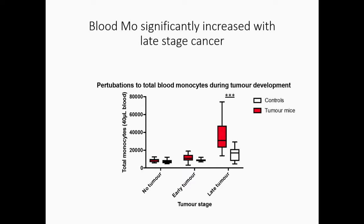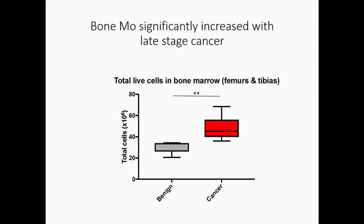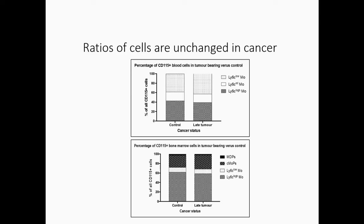If I showed you the kinetic throughout the time, you'll see that this is a gradual expansion, but highly significant by late tumor stage. And just to give you an idea of what the mice are like at that stage, they have huge tumors — they're sort of wobbling around the cage. We also see an expansion of total bone marrow cells, which is nearly twofold. But interestingly, we didn't see a change in the ratios between the Ly6C populations in blood or bone. And the ratio was unchanged.